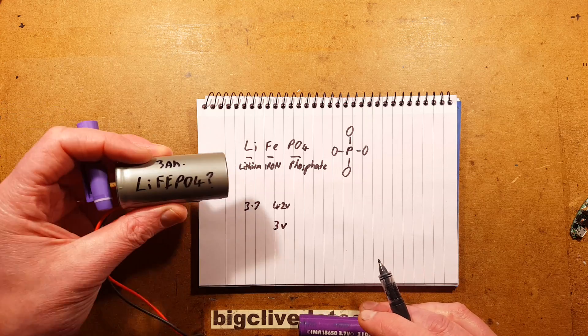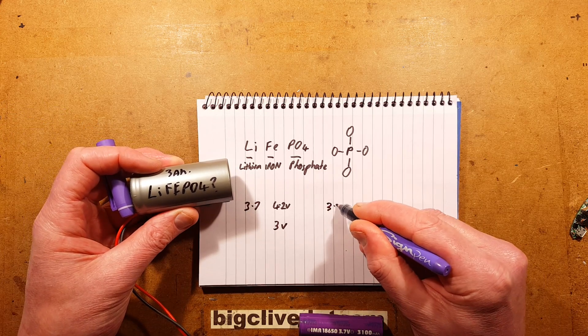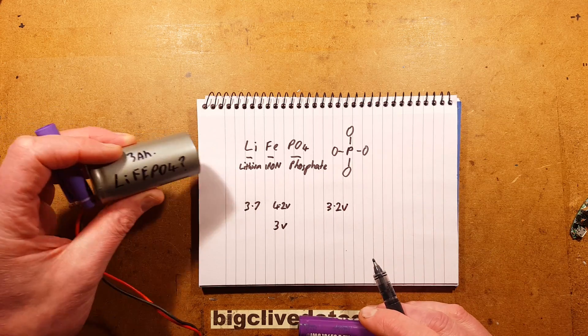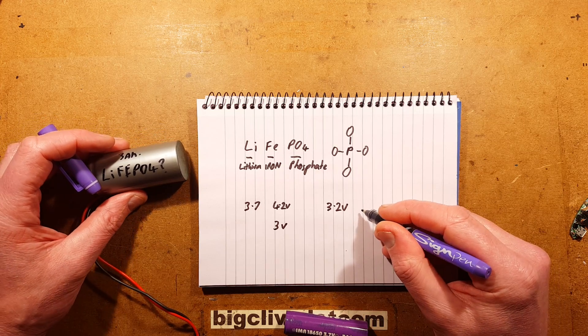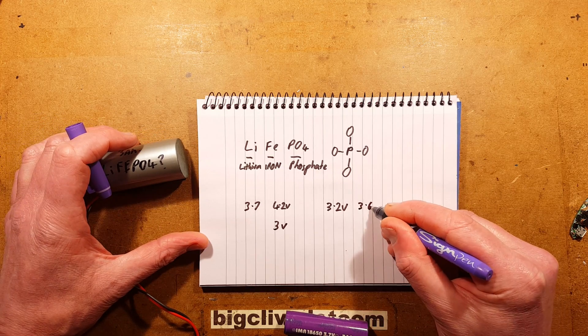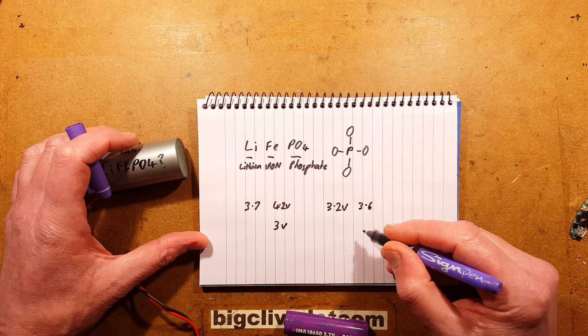These ones are actually usually rated 3.2 volts. This is part of the lesser capacity aspect of it. And they start—typically the upper limit will be about 3.6 volts, absolute maximum 3.65.